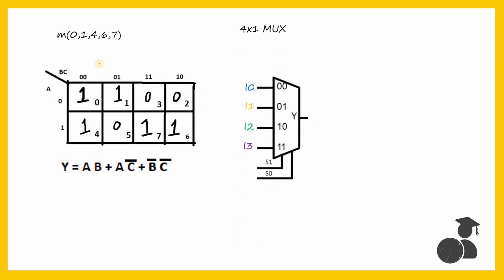Now let's see how we can represent our SOP function using a 4-to-1 multiplexer. In a 4-to-1 multiplexer, we have two select lines. But for our SOP expression, we have three variables A, B, and C, so we can select any two of these three variables as our select lines. Let us take B and C as select lines, since in our Kmap representation they appear together.